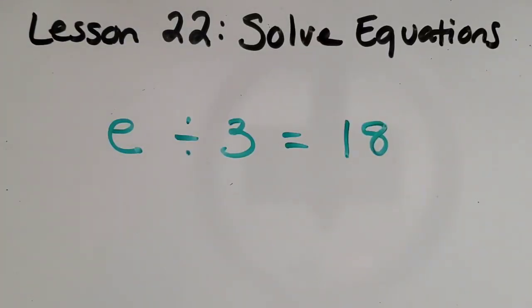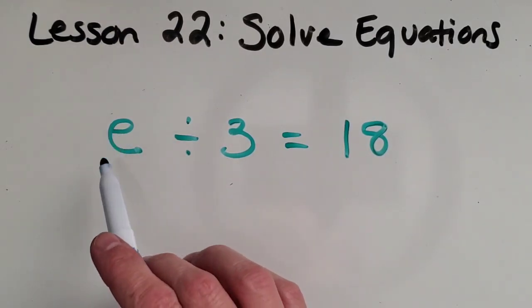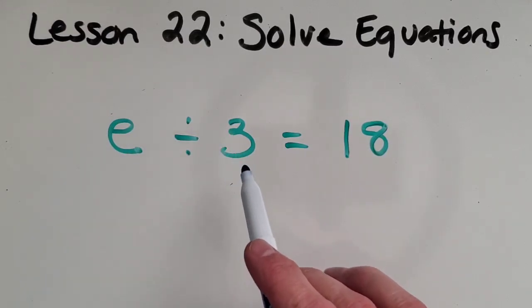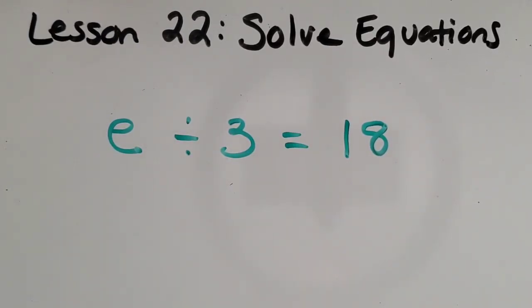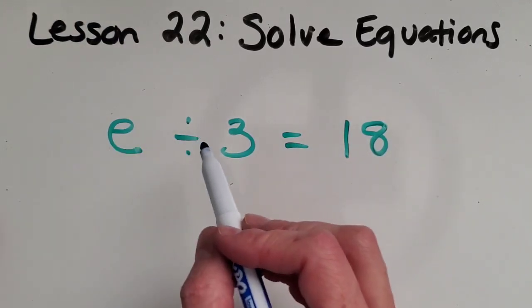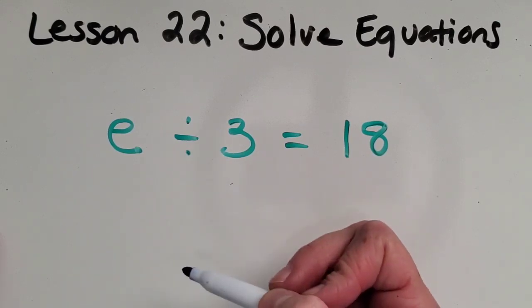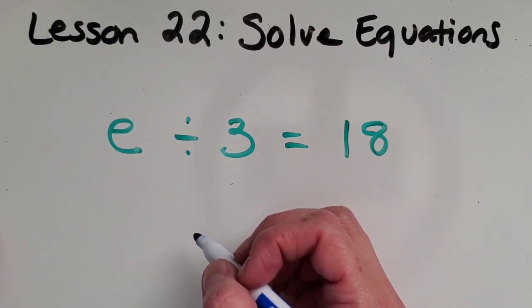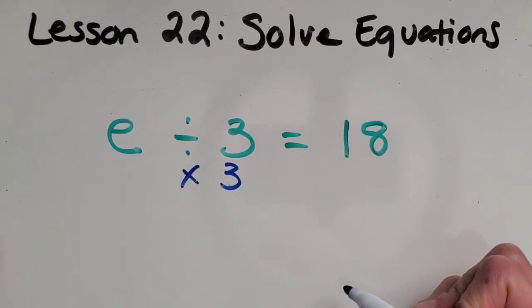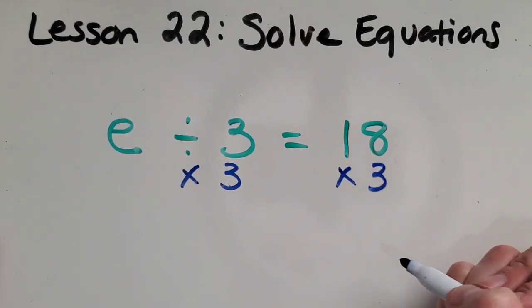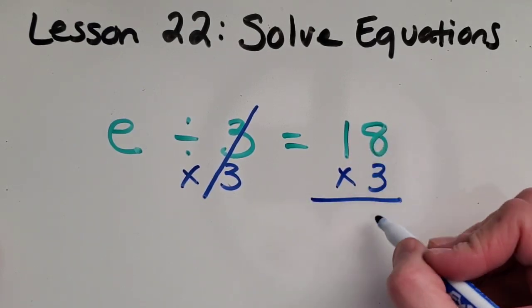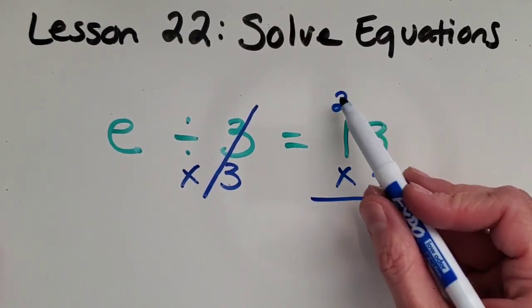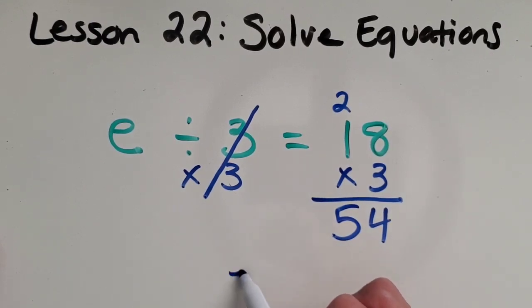Now let me show you another type of problem just to get a little more practice. So if I have a mystery number e, or a variable, divided by three, and I know it equals 18, it may be hard to kind of think backwards here and think, hmm, what number divided by three is 18. We might not know that. So instead of thinking about it that way, we can do the opposite operation. What is the opposite of division again? Oh, good. We can multiply by three and do that to the other side. Okay, that cancels out these since they're the opposite. And now I can just figure out my answer over here. So eight times three is 24. One times three is three plus the two is five. So the answer was 54.